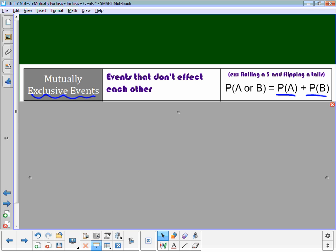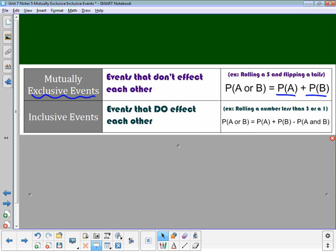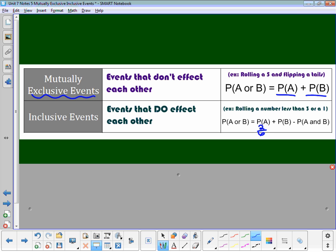On the flip side, if we look at inclusive events, inclusive events are events that do affect each other, events that have something in common. One example might be rolling a number less than 3, so that would be 2 or 1, or rolling a 1. Well, some of those things overlapped. So I have the probability of A, rolling a number less than 3, which is 2 out of 6, the probability of B, rolling the number 1, which is 1 out of 6, and subtracting out the probability of them both.